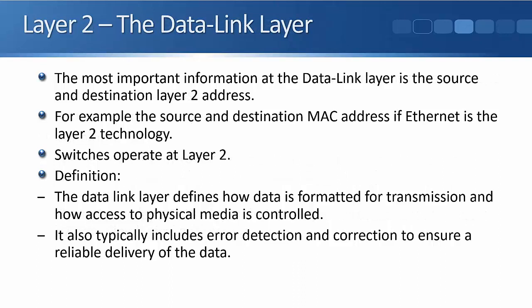The next layer is layer two, the data link layer. The most important information here is the source and destination layer two address. Just like with layer three and four, there is other information also included in the layer two header. For example, the source and destination MAC address if Ethernet is the layer two technology. Different layer two technologies use different formats for their addressing — for example, old legacy frame relay uses DLCI numbers for the addressing. With Ethernet, which is what is always used on our local area networks, it's the MAC address that is used. Switches operate at layer two — they are layer two aware devices. The definition for the data link layer: it defines how data is formatted for transmission and how access to the physical media is controlled. It also typically includes error detection and correction to ensure reliable delivery of the data.